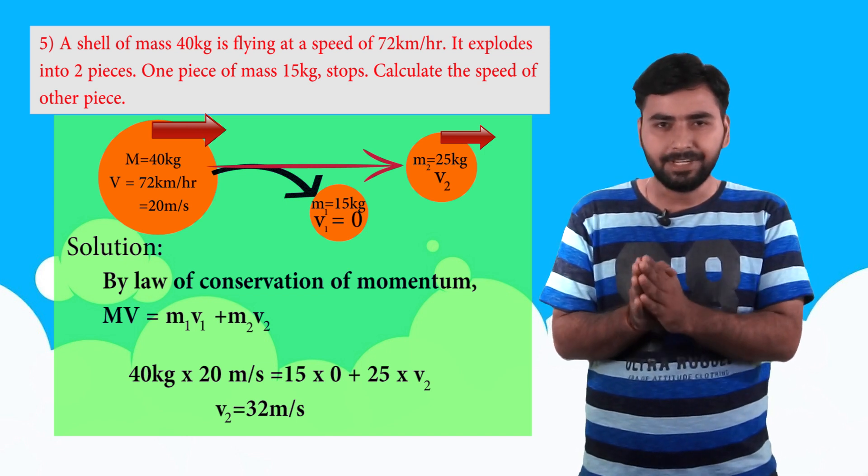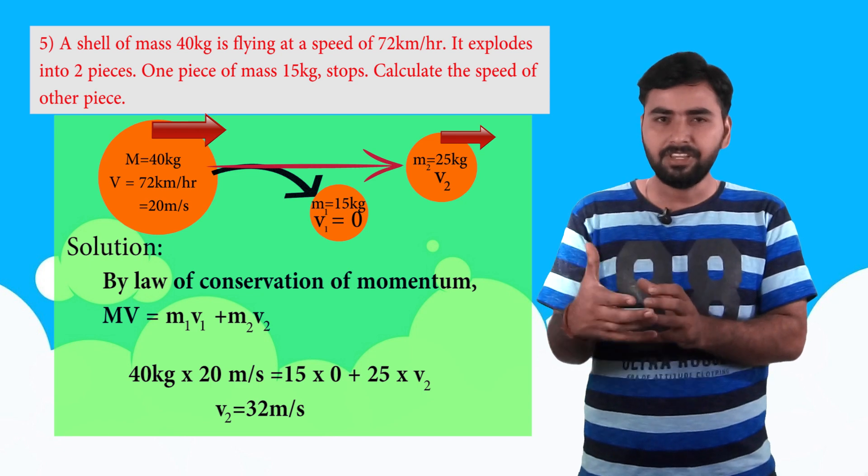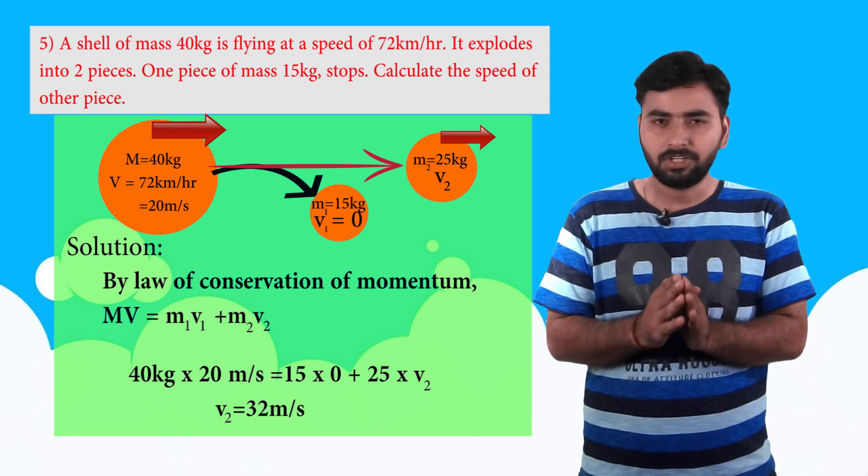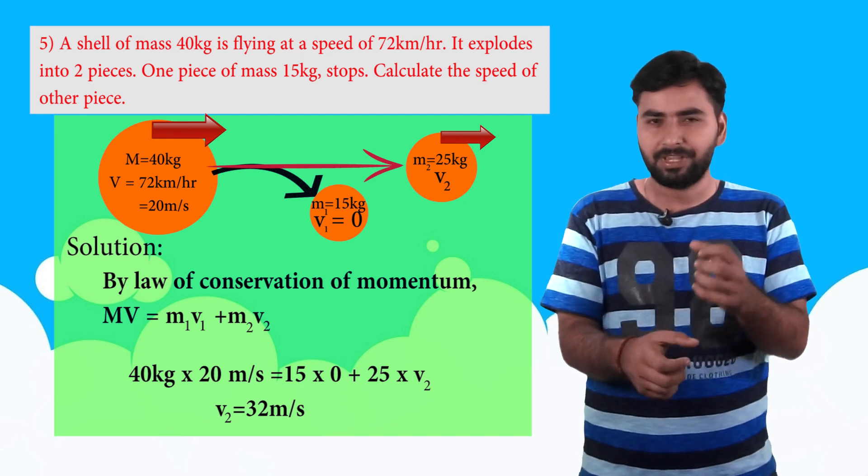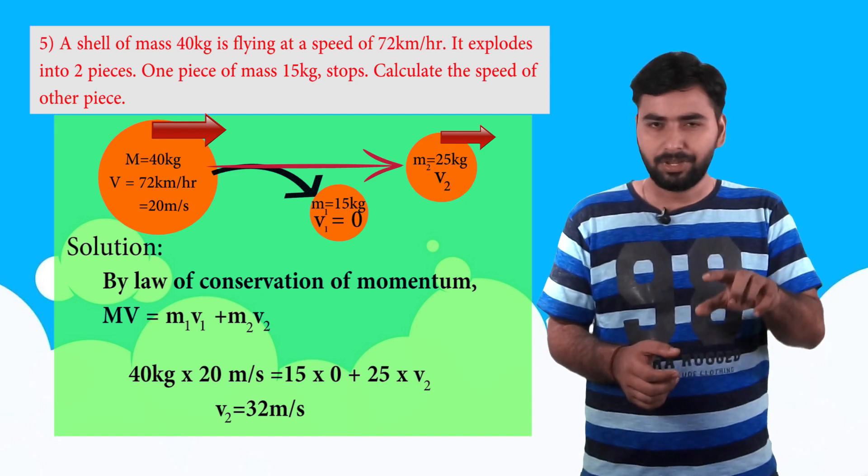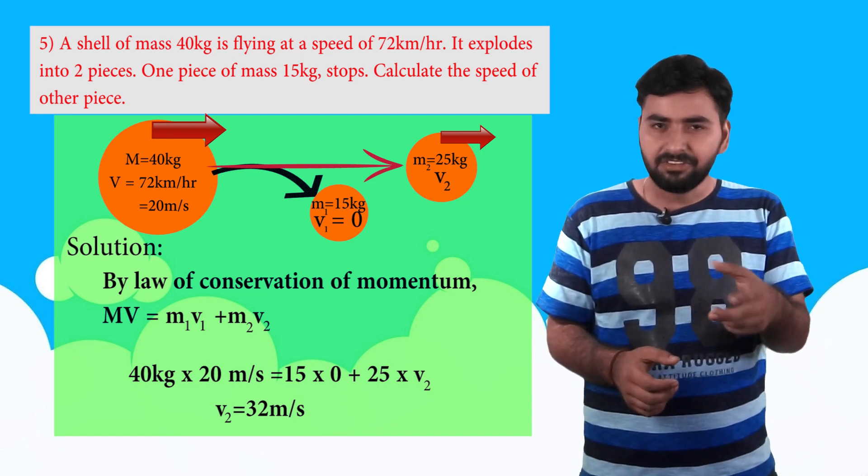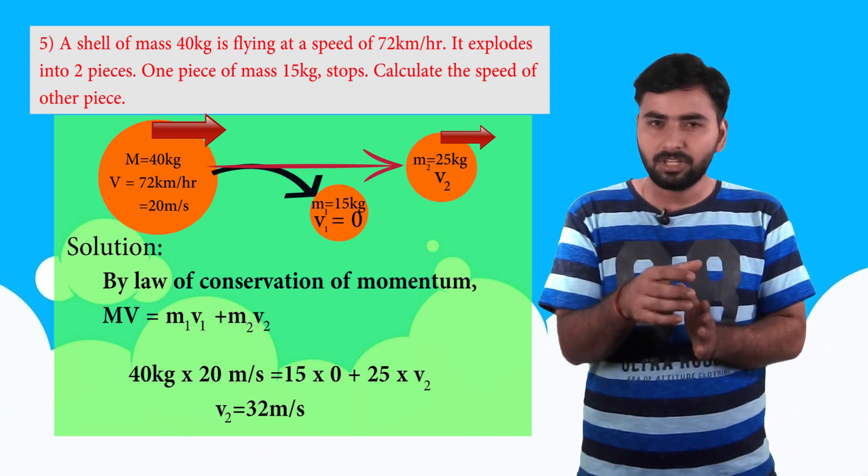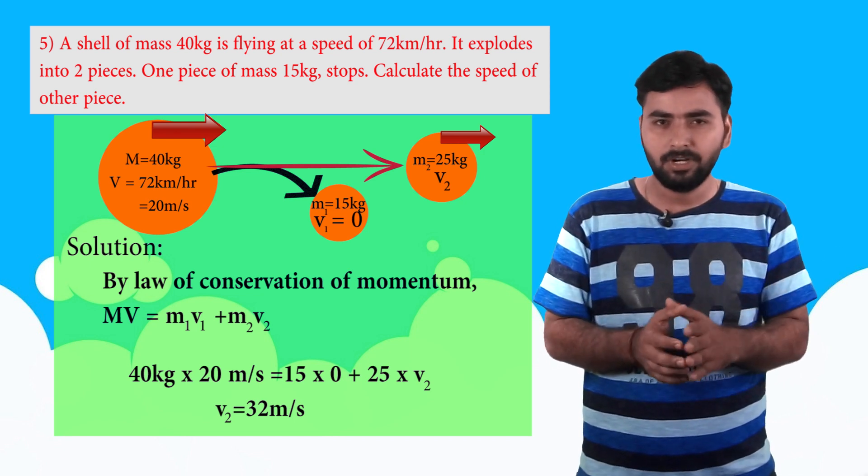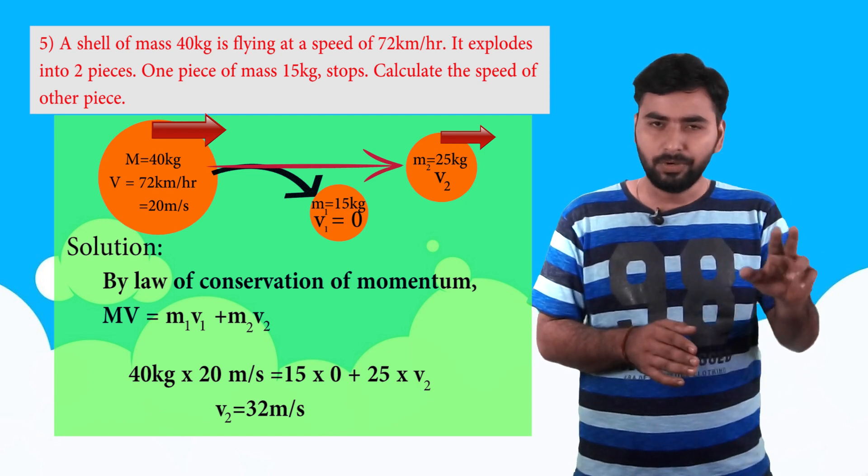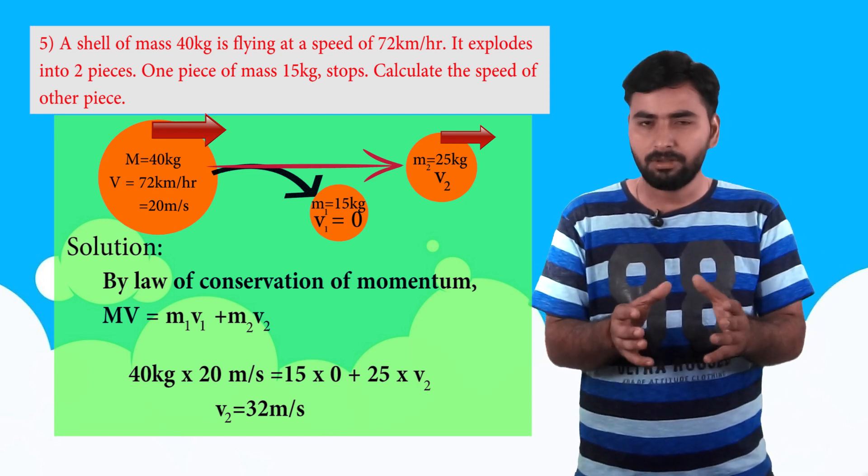So m was 40, velocity is 20, 40 into 20 is equal to, finally it's in 2 pieces, one piece is 15 kg which has zero velocity. So M1 is 15, V1 is zero. We need to find V2, and M2 is, if this is 15, then the remaining is 25 kg. If we subtract 15 from 40, we get 25. So 25 into V2, we need to find V2 here.